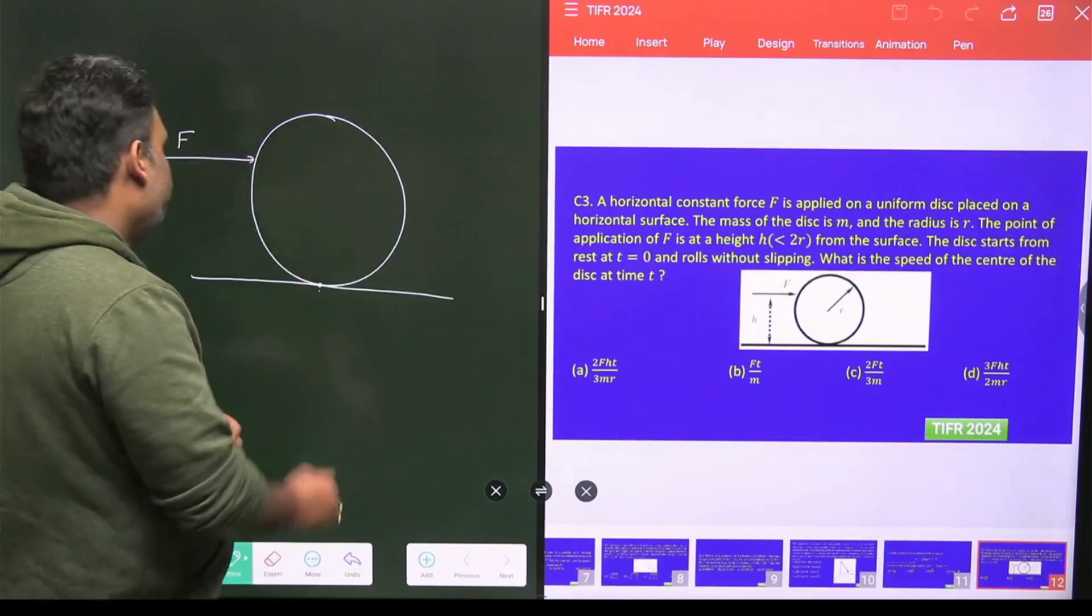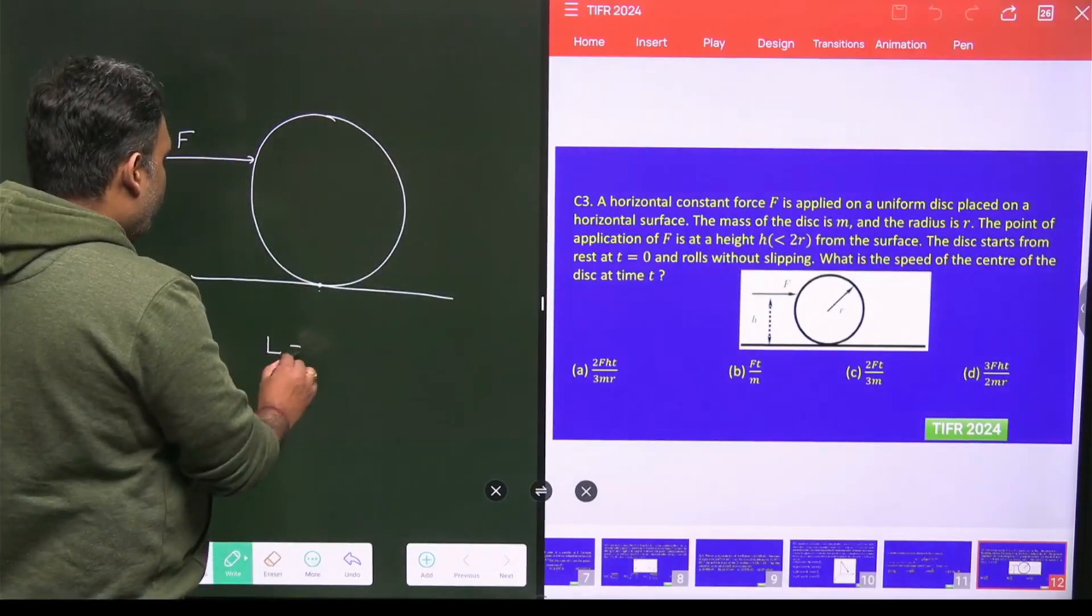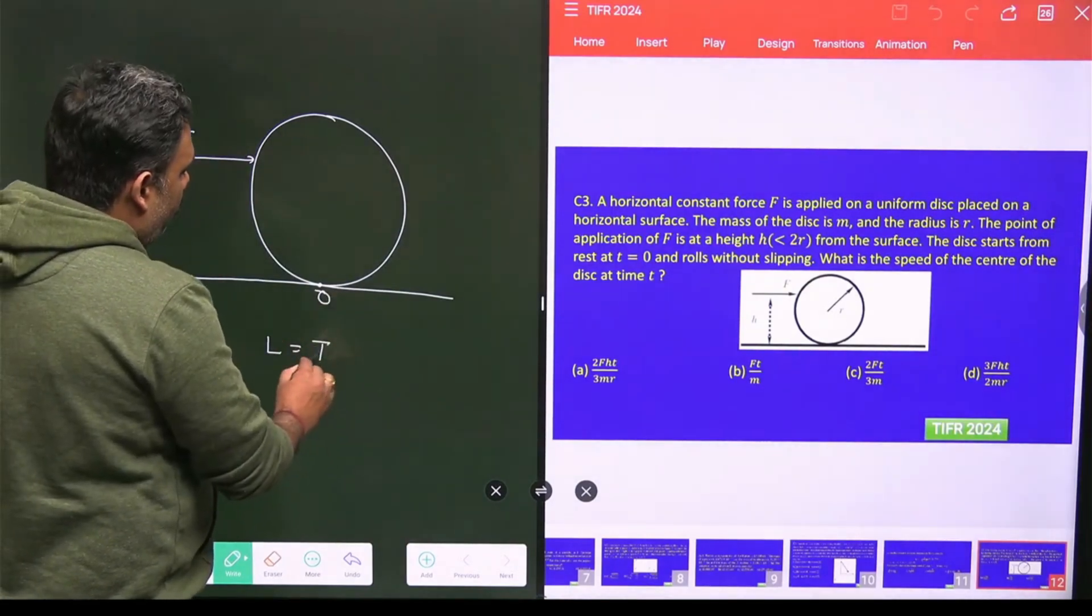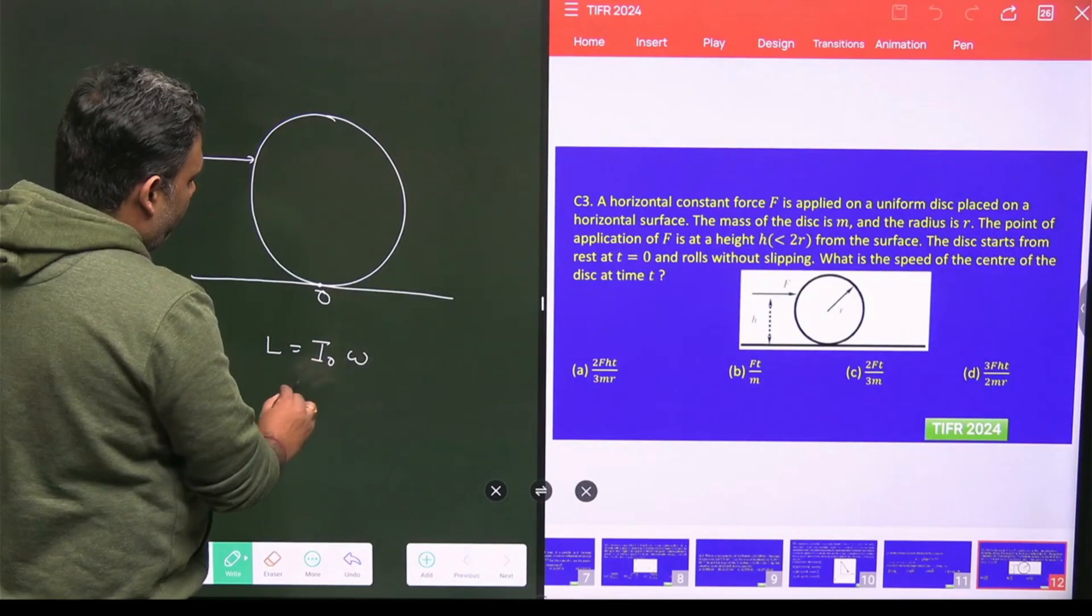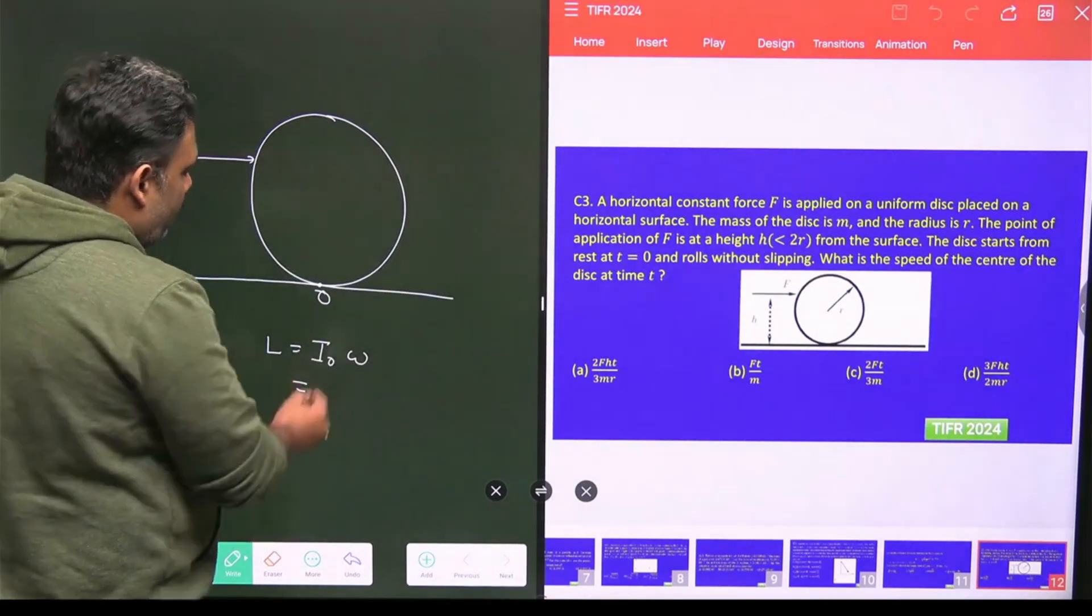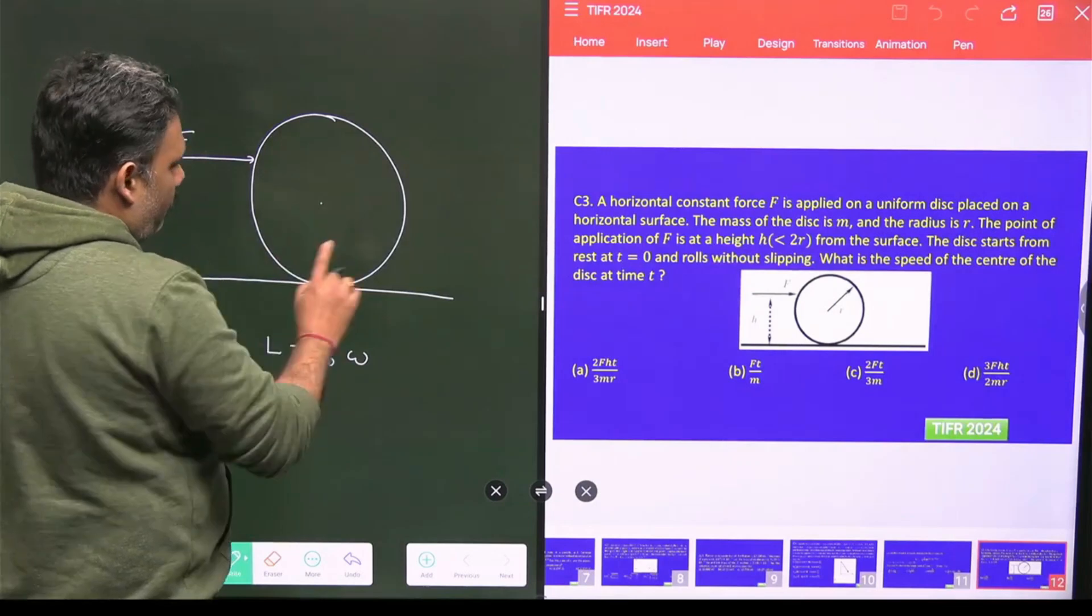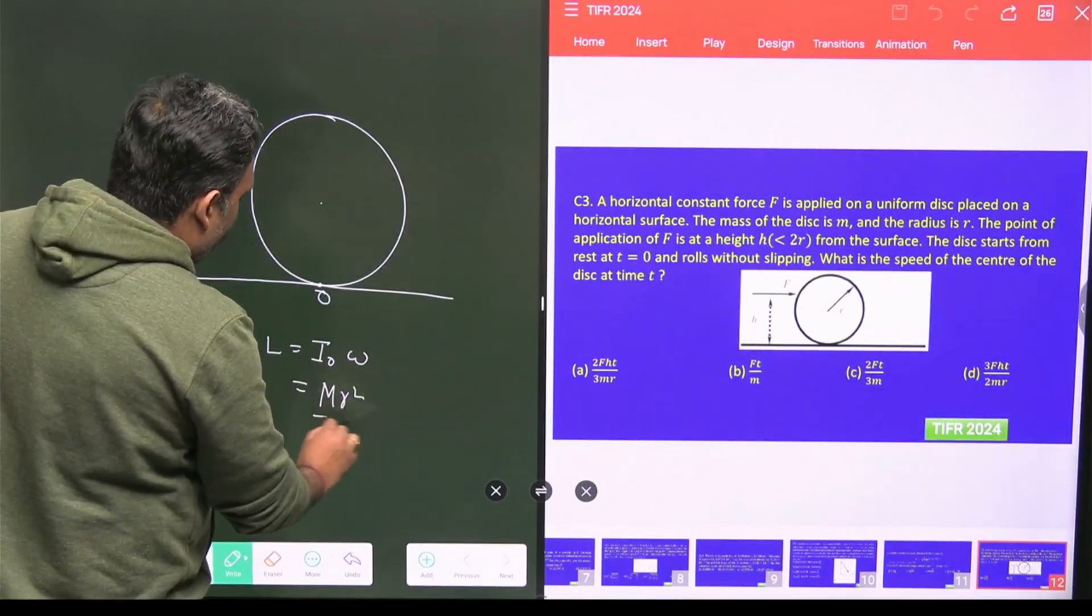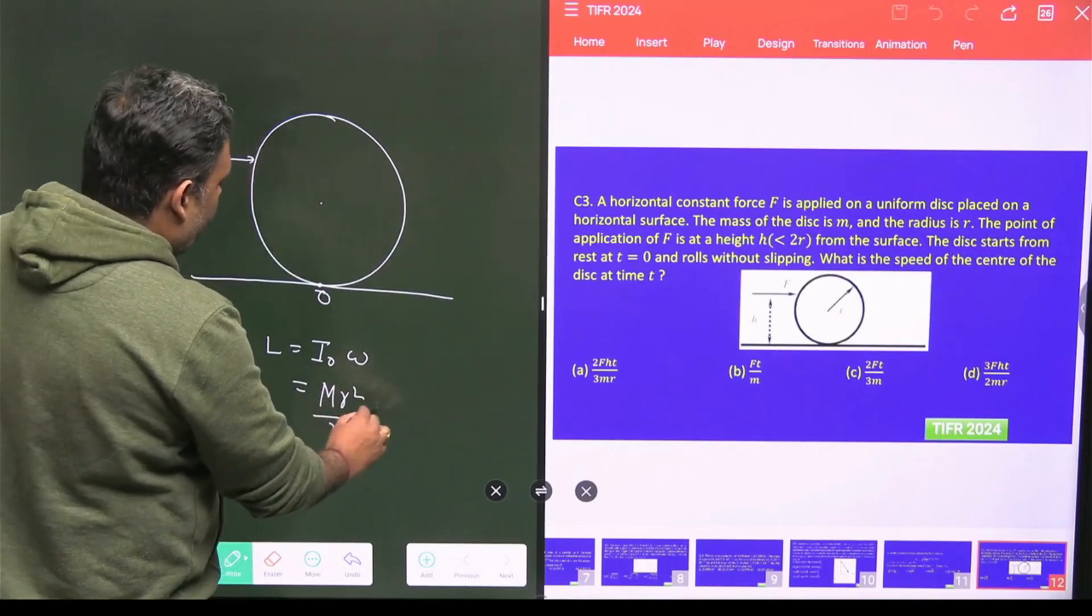So what we will do, we will try to find the angular momentum about point of contact O. And that value equals I_O times omega. And what will be this moment of inertia? So moment of inertia about center of mass is mr² by 2. This is moment of inertia about center of mass.